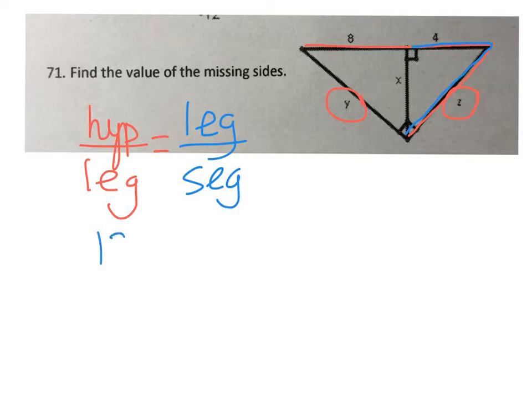The hypotenuse is 12 over z in proportion to z over 4. The whole entire hypotenuse here is 8 plus 4, which is 12. Cross multiplying, z squared equals 48.